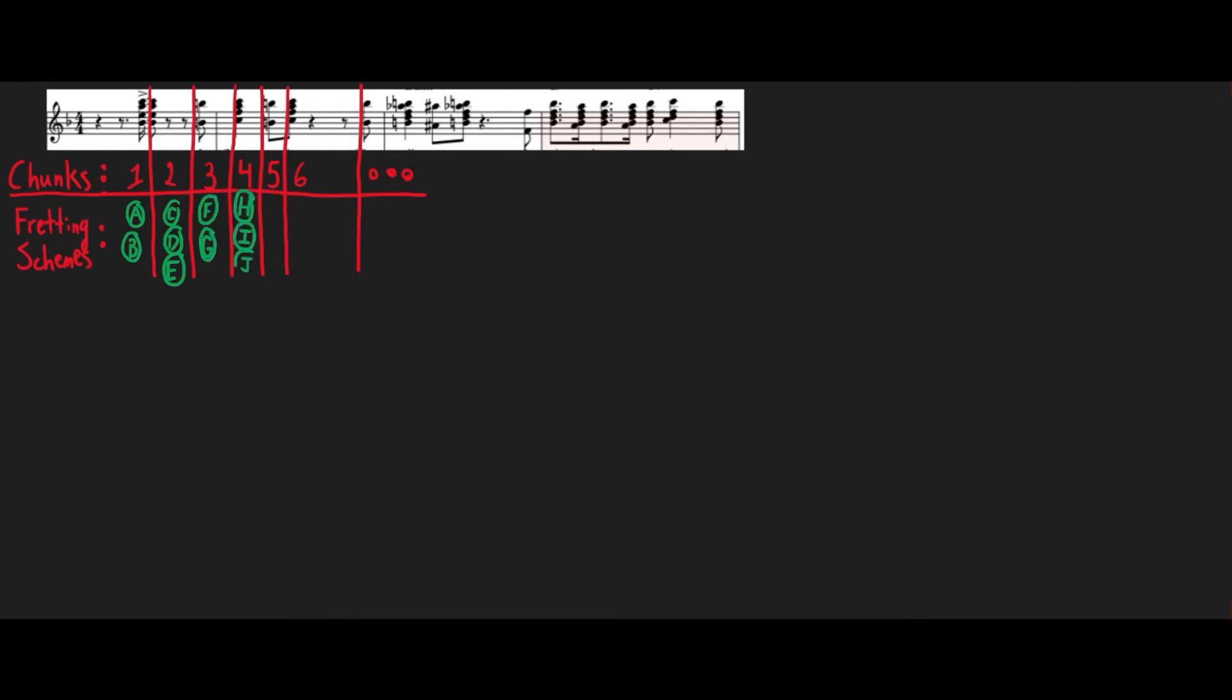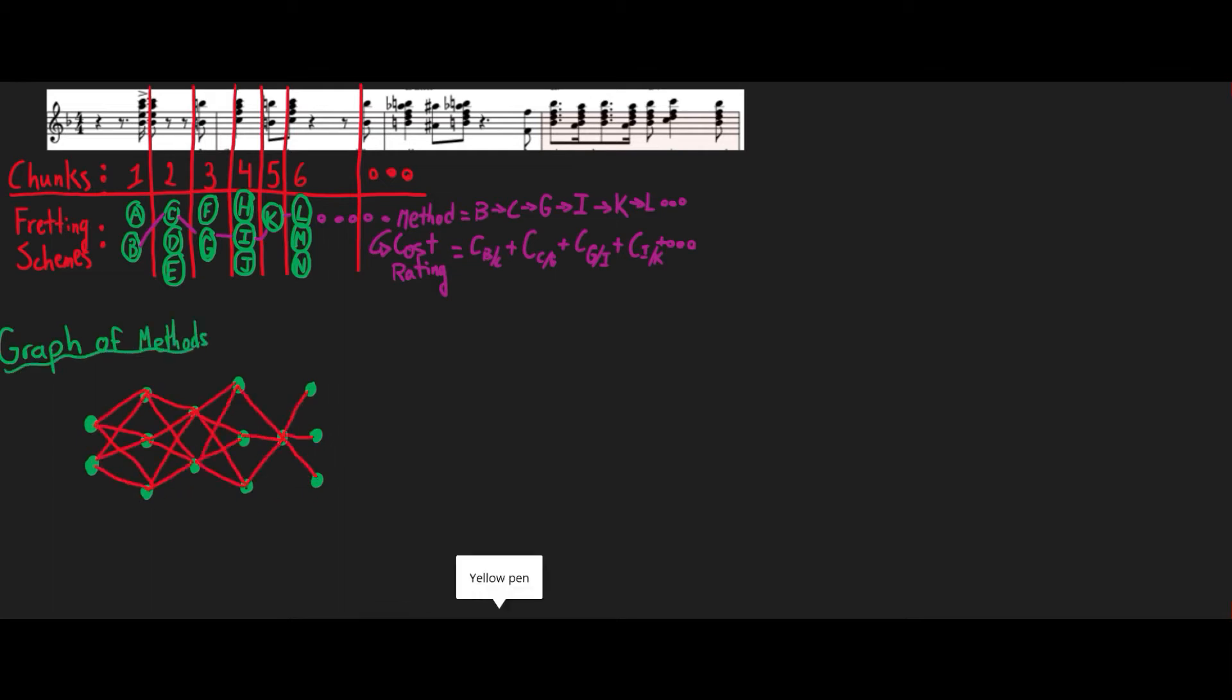Considering each chunk of the song is a layer in a graph, and each fretting scheme for the notes present in that chunk as a node in that layer, you can then think of the song as a network of nodes where each layer is fully interconnected with the next. That helps you see how there are a potentially massive number of ways one could play a given song.